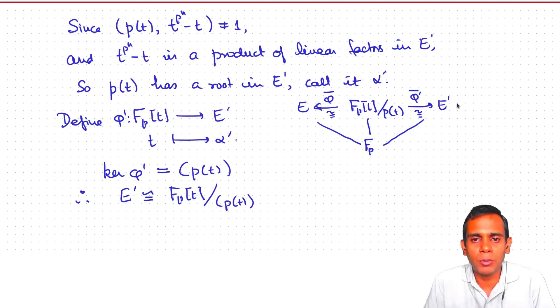What this is saying is that up to isomorphism, there is only one finite field of any given order.